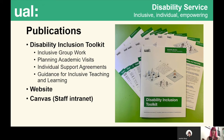We've also recently updated our website to include more explicit information about the social model. We found that students often aren't familiar with the social model, so we want to make our approach clear from the start. A bit of 'bilingualism' is required — we still refer to specific impairments because that may be the search term students use. We also need to refer to disability evidence we require to register students with the service, but once students are registered, we focus on the social model approach and talk through with students what that means.